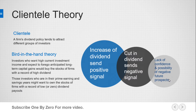Clientele fund dividend policy tends to attract different groups of investors. The bird-in-the-hand theory suggests investors who want high current investment income and anticipate long-term gains buy stocks with a record of high dividends. Those investors who are in their economy and saving years might want to own stocks with a record of low dividend payout.